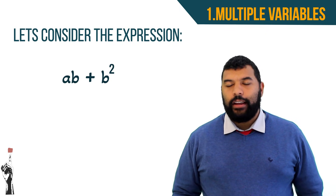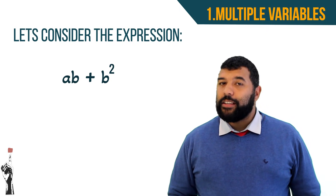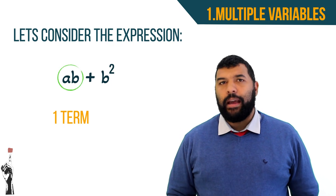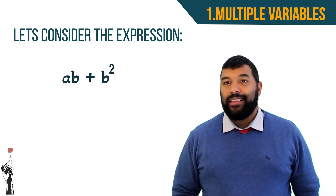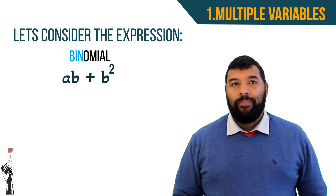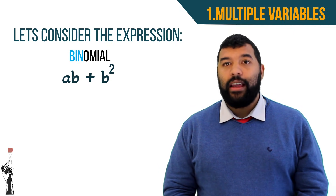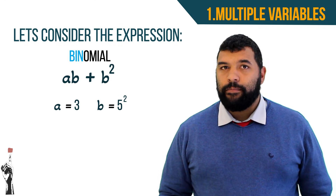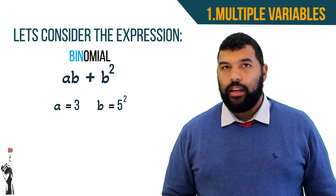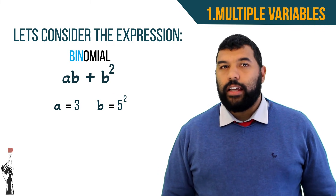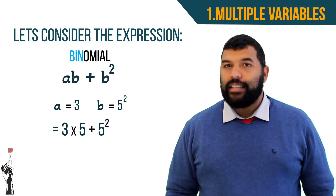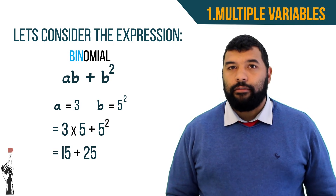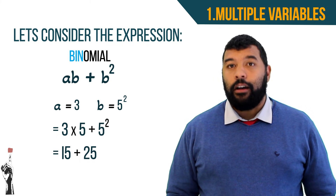Let's consider the expression ab plus b squared. It has two terms — ab and b squared — making it a binomial. If a equals 3 and b equals 5, we replace a with 3 and b with 5 to get 3 multiplied by 5 plus 5 squared. That gives us 15 plus 25, which totals 40.